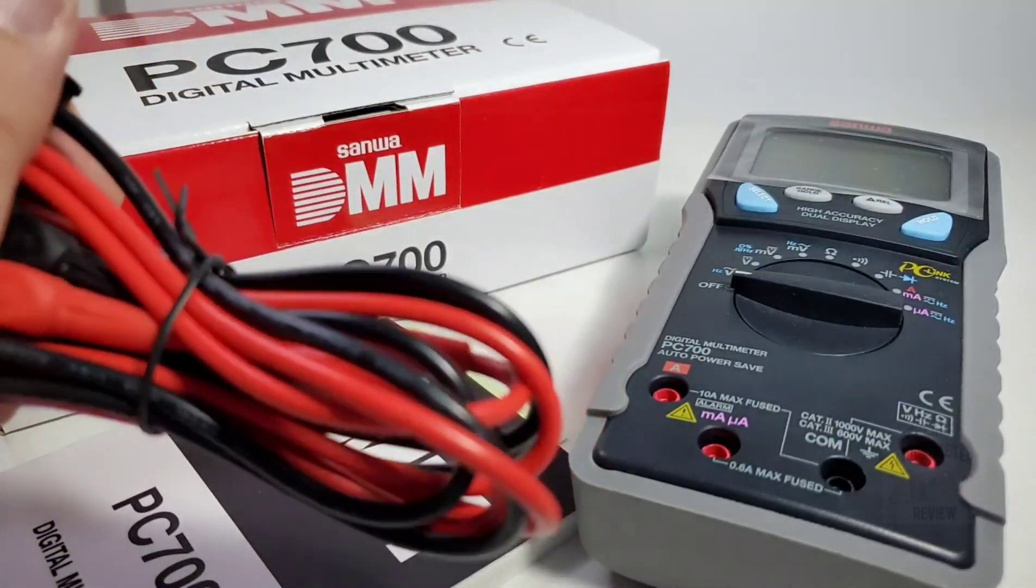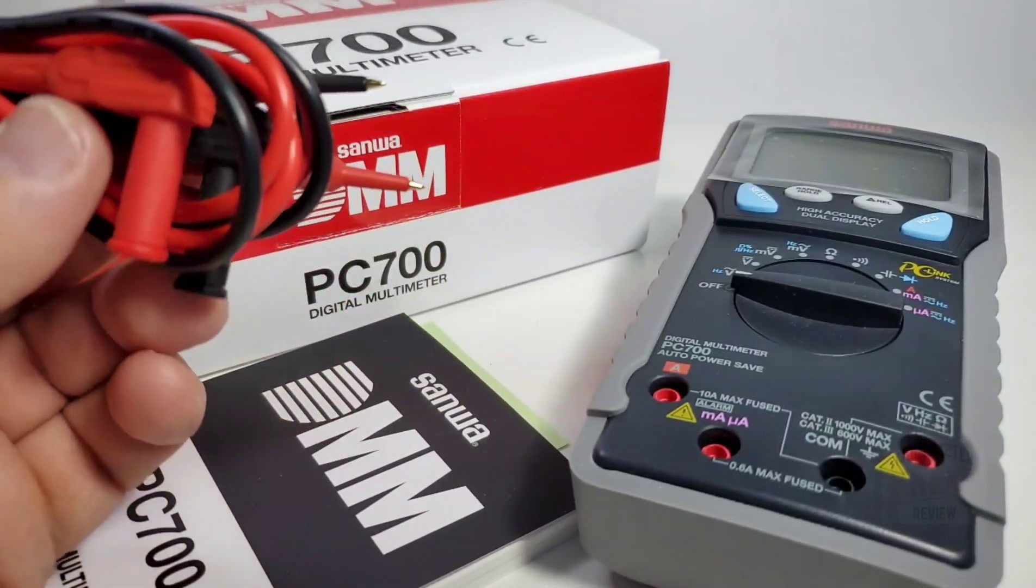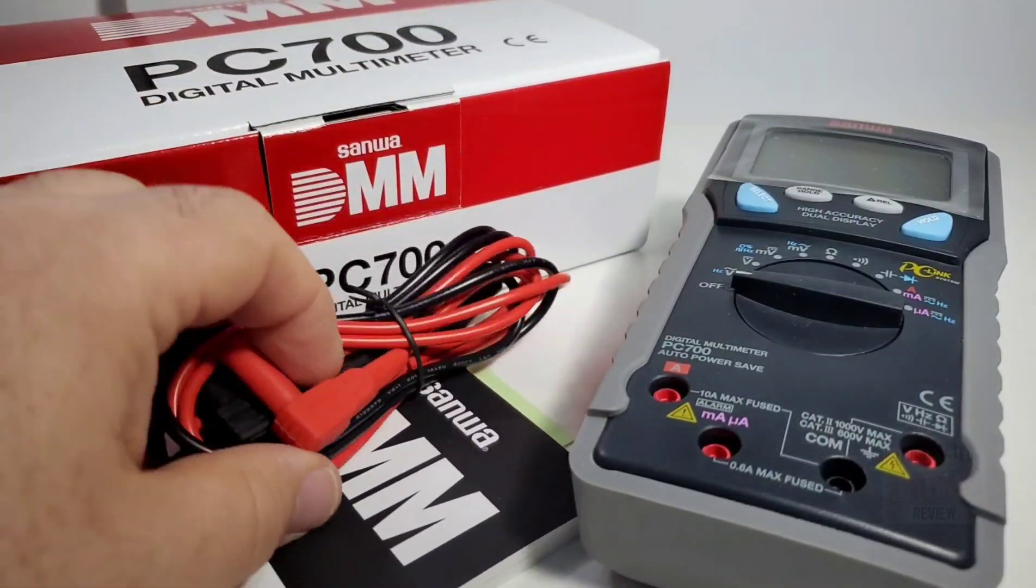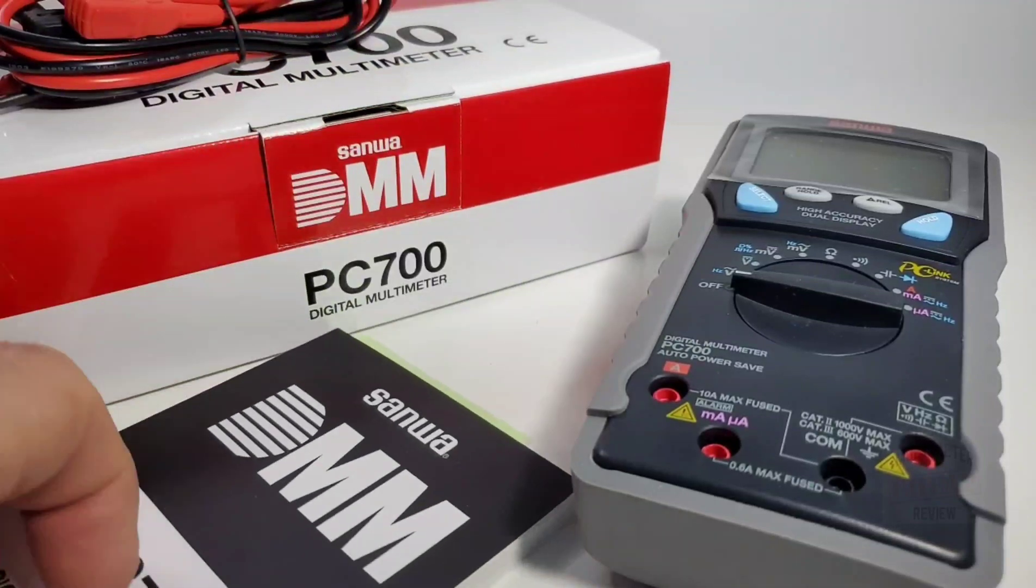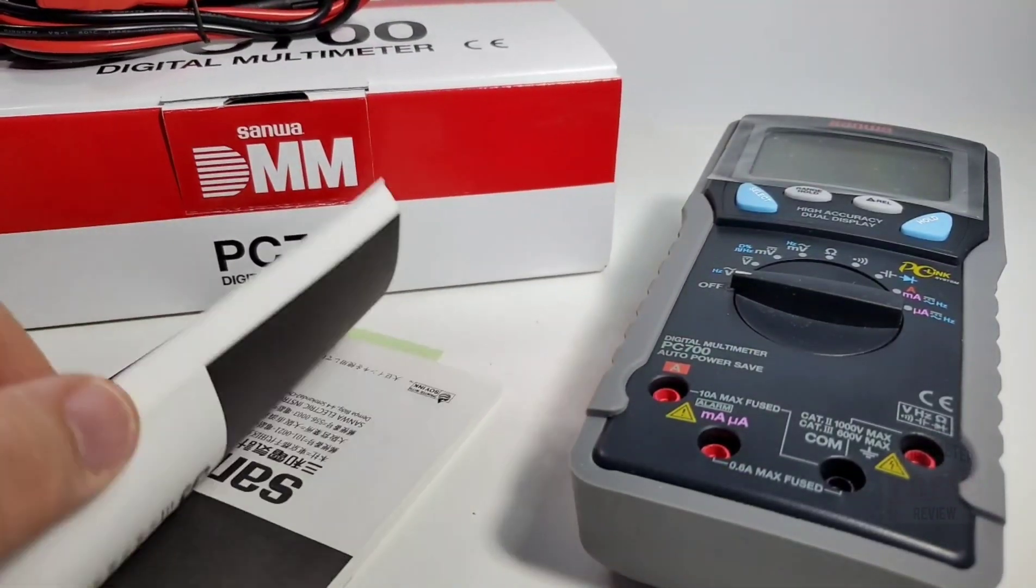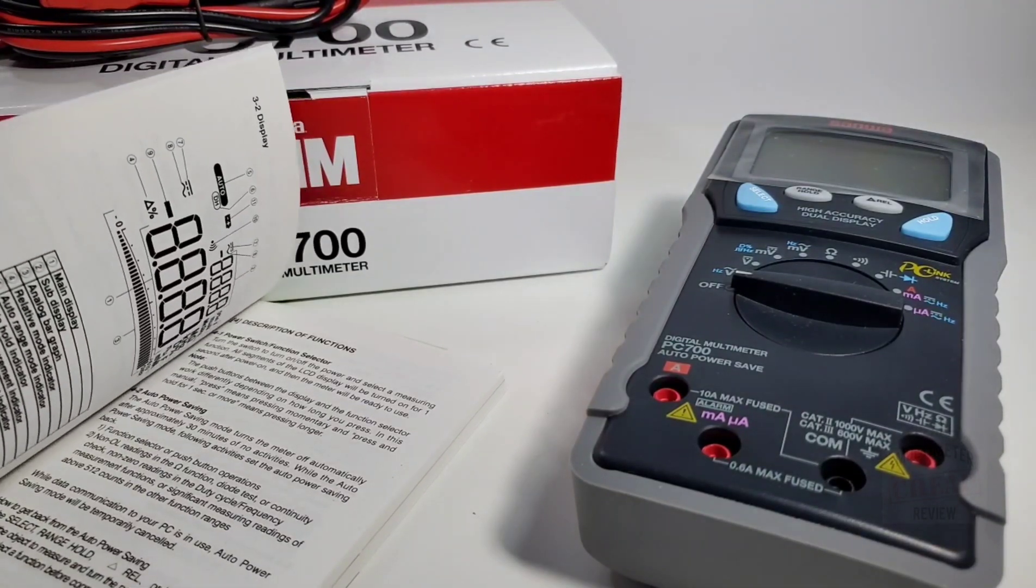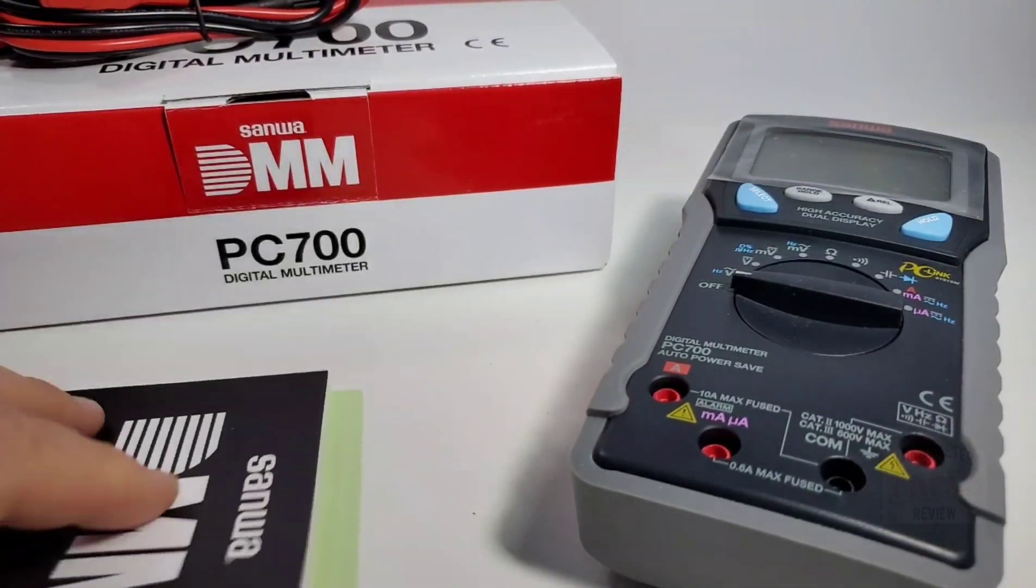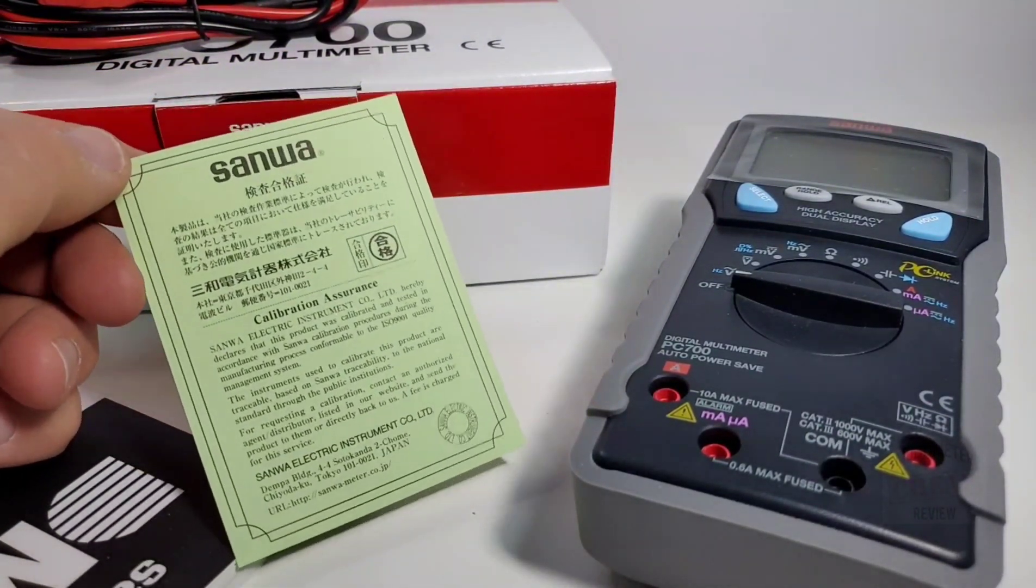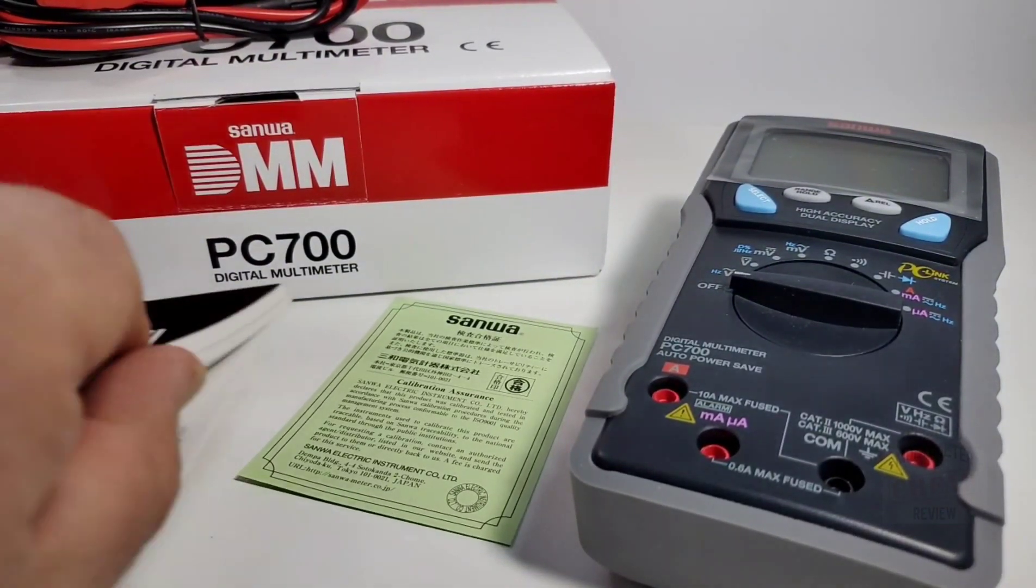You've got your wonderful Sanwa test leads. I am a big fan of Sanwa leads, always gold-plated, always feel really nice. You get your manual, full-size, English and Japanese. Very easy on the eyes, nice big diagrams, extremely verbose, tells you everything you need to know about your new PC700. You also get that venerable calibration assurance certificate telling you that it has been calibrated at the Sanwa factory. This particular PC700 is manufactured in Taiwan.